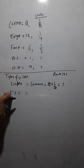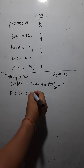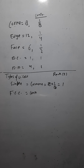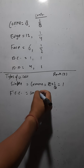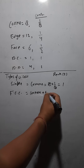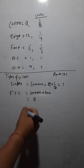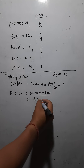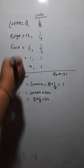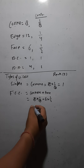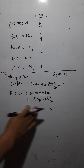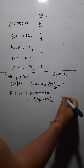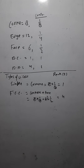For a face-centered cubic (FCC) unit cell, particles are at corners and face centers. 8 corners × (1/8) = 1, and 6 faces × (1/2) = 3. So 1 + 3 = 4. The rank of the FCC unit cell is 4.